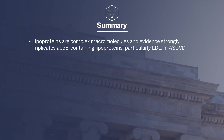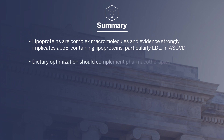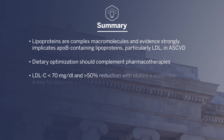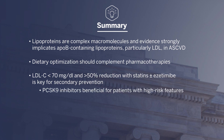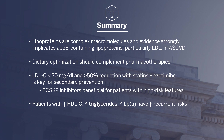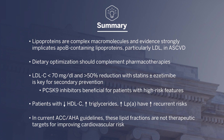In summary, lipoproteins are complex macromolecules, and evidence strongly implicates ApoB-containing lipoproteins — particularly LDL — in atherosclerotic cardiovascular disease. Dietary optimization should complement pharmacotherapies. LDL cholesterol less than 70 mg/dL and greater than 50% reduction with statins plus or minus ezetimibe is key for secondary prevention; for very high risk patients, PCSK9 monoclonal antibodies may be appropriate. Lower HDL, higher triglycerides, and higher LP(a) are important lipid fractions for identifying patients at risk for recurrent events, though in the current ACC/AHA guidelines these are not yet therapeutic targets — but important published literature and ongoing research are teasing this out.